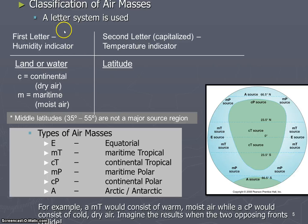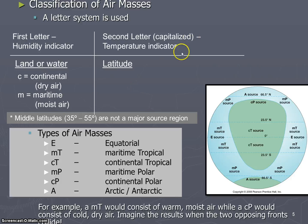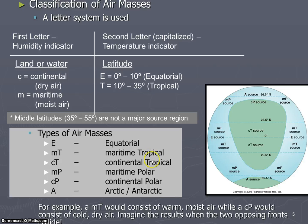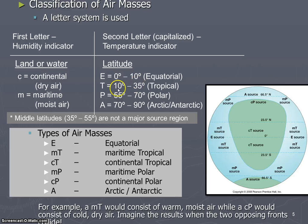How do we classify the air masses? We use the letter system — lowercase c and lowercase m — and then the second letter indicates the temperature. You might have an uppercase E for equatorial, a T for tropical, a P for polar, and an A for arctic or antarctic. The equatorial air masses are obviously going to be in the low latitudes, while tropical air masses originate between about 10 and 35 degrees north and south.